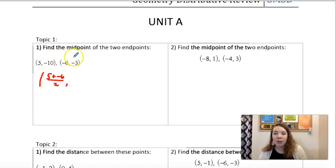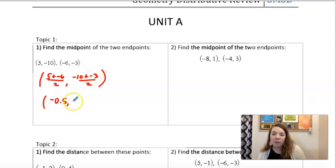And then same, I have to find the middle of negative 10 and negative 3. So add them together, divide by 2. This would give us negative 1 over 2 is negative 5 tenths, and then negative 13 over 2 is negative 6 and 5 tenths.